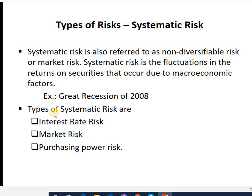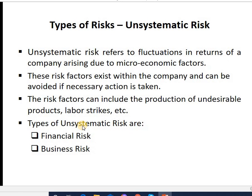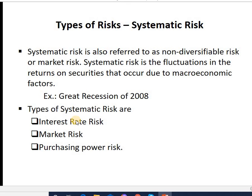The types of systematic risk are: interest rate risk, market risk, and purchasing power risk. Interest rate risk refers to changes in interest rates of banks, bonds, and debentures, which directly or indirectly affect company projects. Market risk arises due to changes in demand and supply, GDP growth rate, government regulations, and government budget. Purchasing power risk refers to the value of money — when prices increase, the value of money and the purchasing power of consumers comes down.